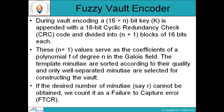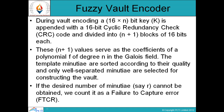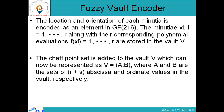If the desired number of minutia cannot be obtained, it is counted as a failure-to-capture error. The minutia x_i, where i goes from 1 to r, along with the corresponding polynomial evaluations f(x_i), i from 1 to r, are stored in the vault V. A set of s chaff points is also added.